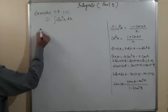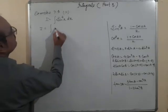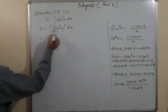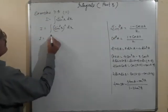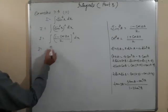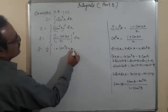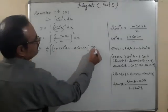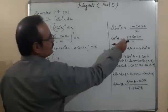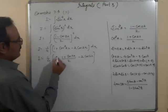For sin⁴x, write it as (sin²x)². Sin²x = (1 − cos2x)/2, so I = ∫[(1 − cos2x)/2]² dx = (1/4)∫(1 − cos2x)² dx. Expanding using (A−B)² = A² − 2AB + B²: I = (1/4)∫(1 + cos²2x − 2cos2x) dx.